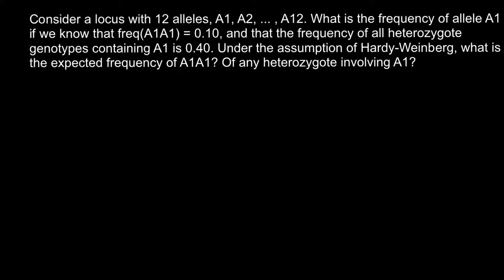What we know is that the frequency of the homozygous recessive genotype is 0.10. Now I can show you the Hardy-Weinberg formula that stands for the frequency of different genotypes. I'll show you the formula for two alleles, and we are only going to use a small portion of it. The formula is: p squared plus 2pq plus q squared equals 1.